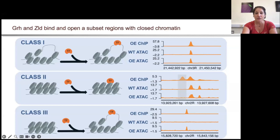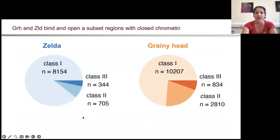When we looked genome-wide for Zelda and Grainy Head, we could identify the largest class being class 1, these open sites, but we also identified extensive binding to closed chromatin and opening at a subset of these regions.